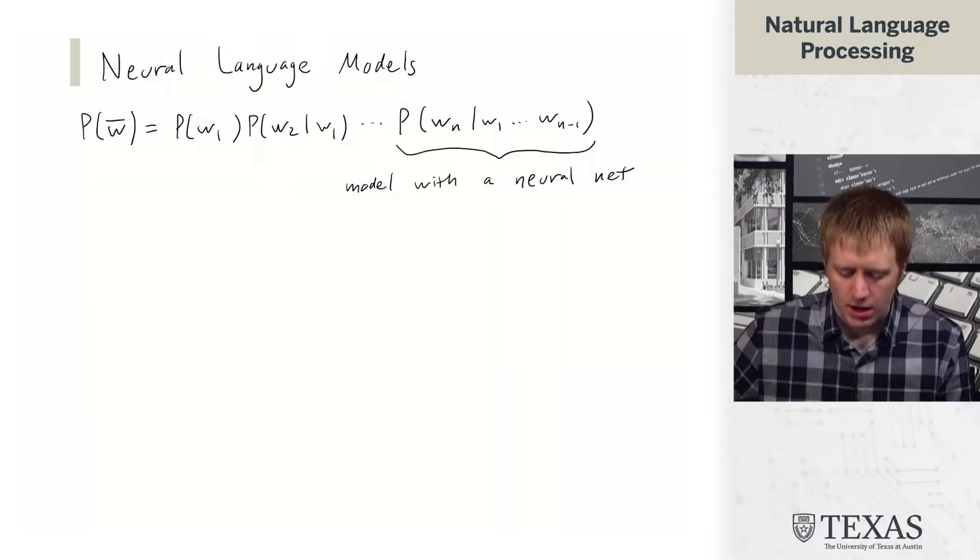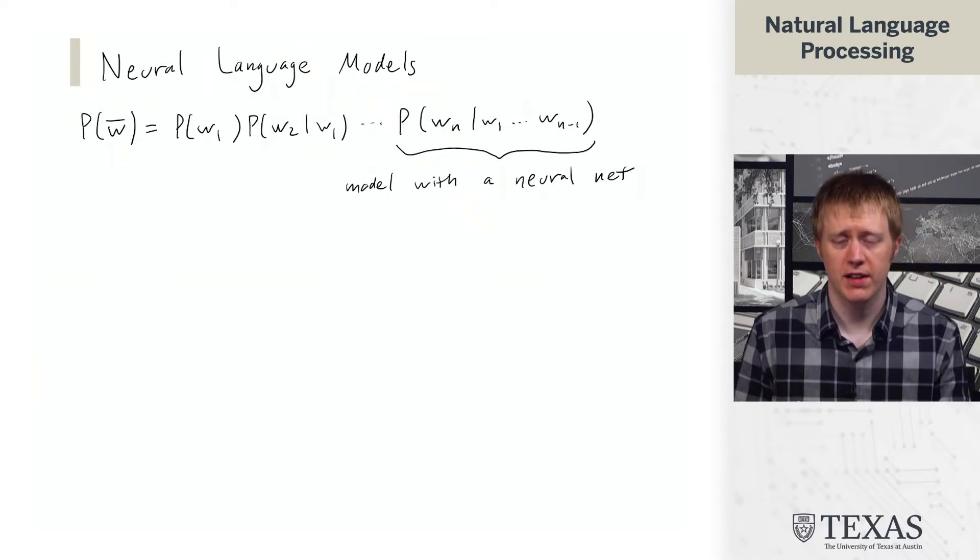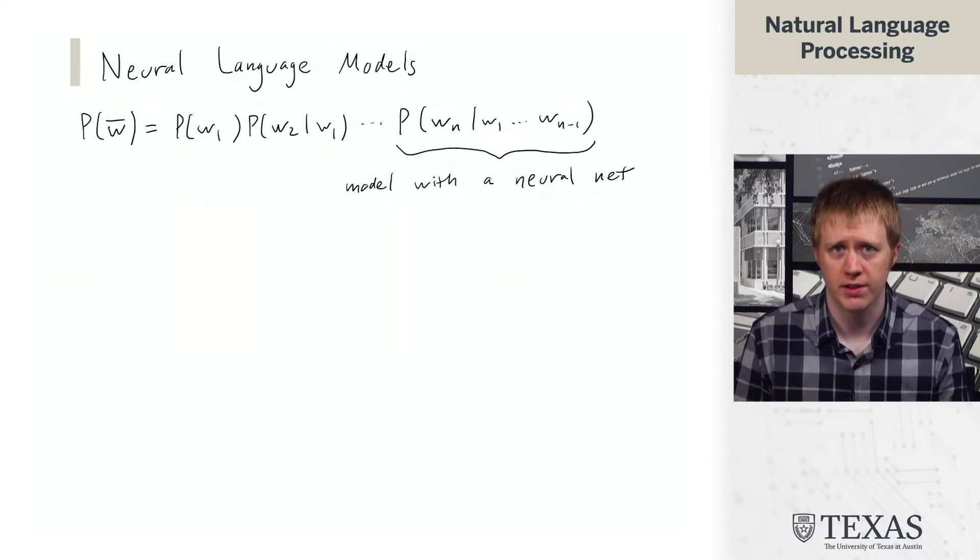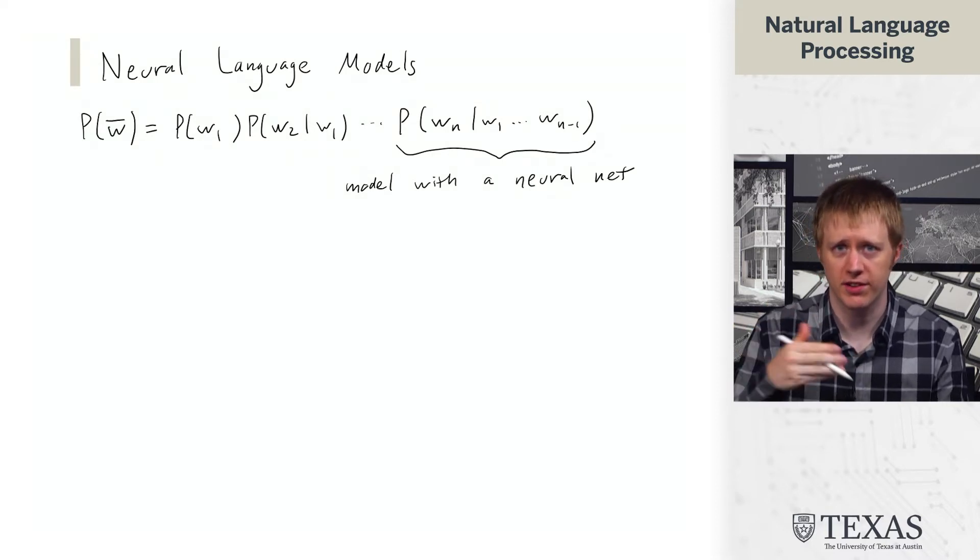In this segment, we're going to talk about neural language models. From the definition we had before, we can define the probability of a sequence of words as the probability of the first word times the probability of the second given the first, et cetera,